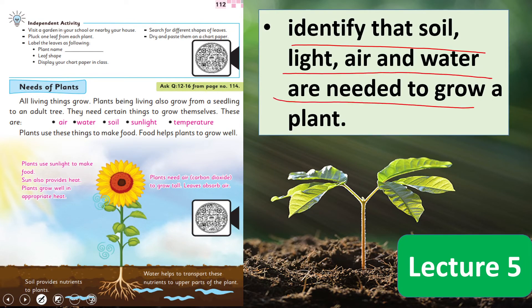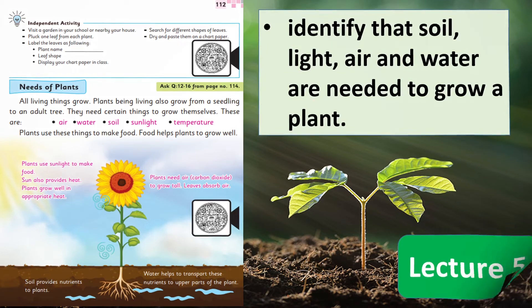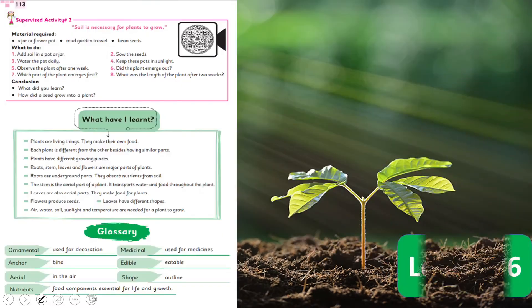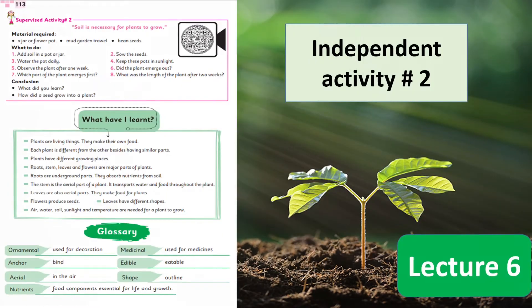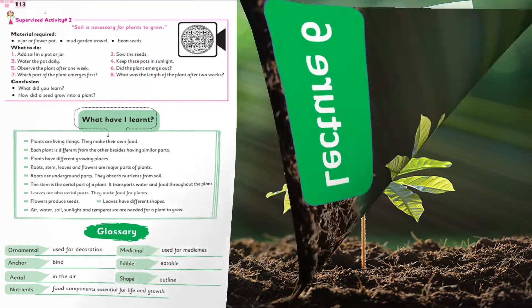Then in Lecture number 5, students will be able to identify that soil, light, air, and water are needed to grow a plant — plant ko grow karne ke liye kin cheezon ki zaroorat hoti hai. This will be covered in Lecture number 5. Then in Lecture number 6, students will do another activity — Activity number 2, given on page number 113.